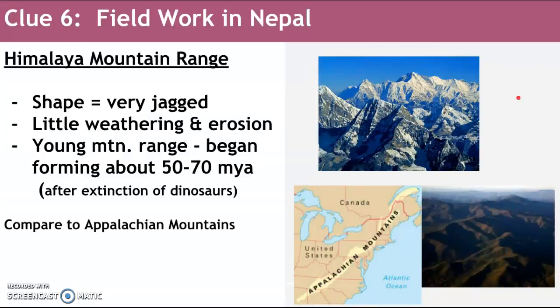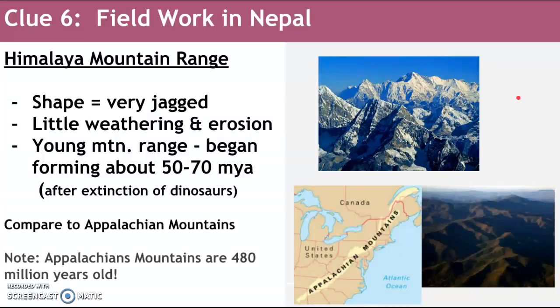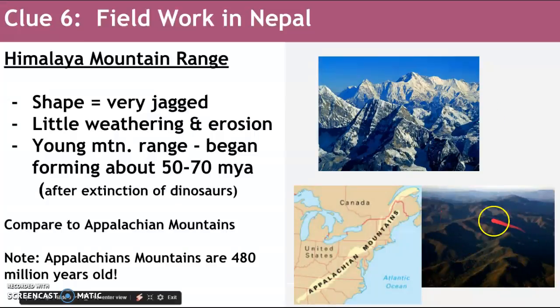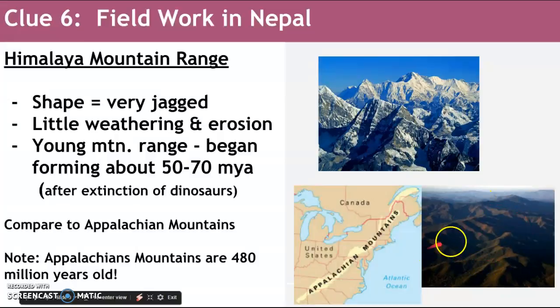Compared to the Appalachian Mountains, which have been around for almost 500 million years, and as you can see, they've had plenty of time to weather and erode. They look much more rounded.